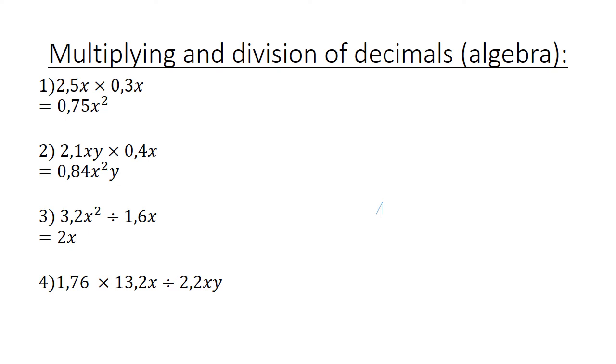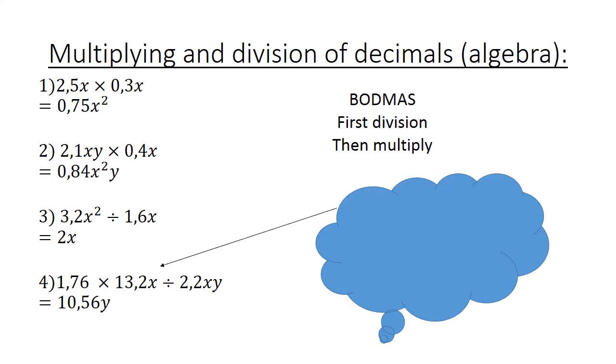1.76 times 13.2x divided by 2.2xy. What are we going to do first? The answer is 10.56y. We are going to use BODMAS. First division, then multiply. 13.2x divided by 2.2xy is equal to 6y, and 6y times 1.76 is equal to 10.56y.